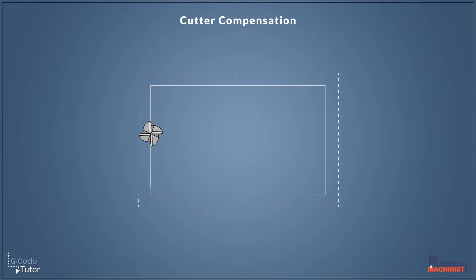So why do we need Cutter Compensation? If we didn't use Cutter Compensation and we programmed our toolpaths to be the same size as our part, we would cut undersized by the radius of the cutter. This is because we programmed to the centre line of our cutter. So if we're programming our dimensions on our part, the centre line of the tool would follow that path and not the cutting edge. So that means we either have to program our parts a little bit bigger to compensate for the radius of our cutter, or we use Cutter Compensation.